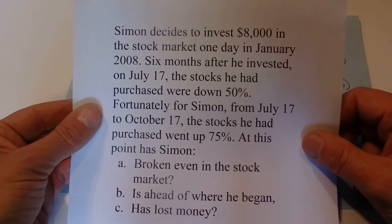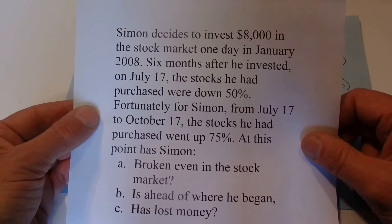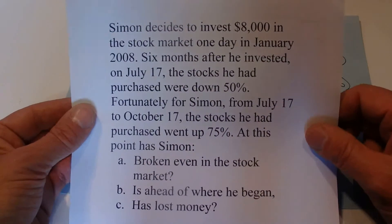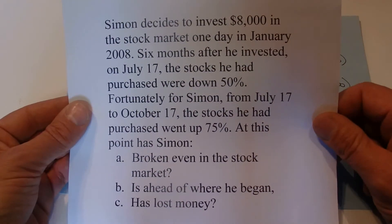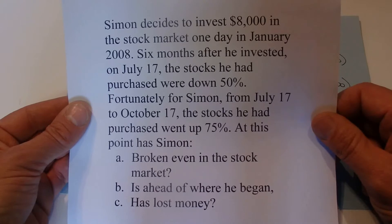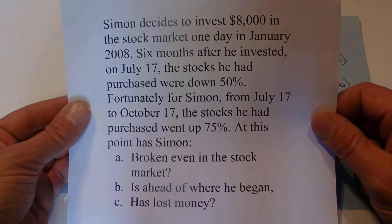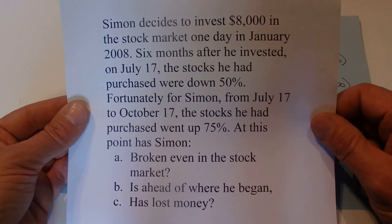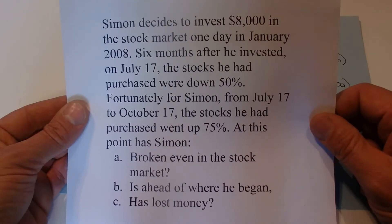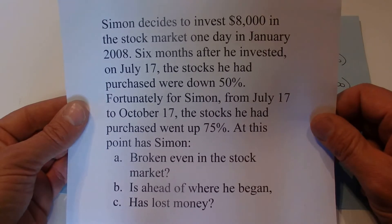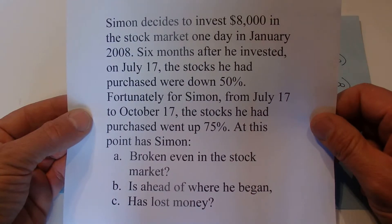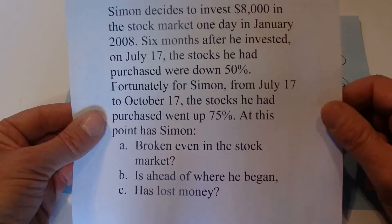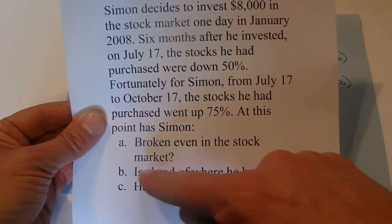Today I'm going to go through one of these cognitive reflection test questions. These are great questions because the most obvious answer is not correct. Here's the question: Simon decides to invest $8,000 in the stock market. In one day in January 2008, six months after he invested — on July 17 — the stocks he had purchased were down 50%. Fortunately for Simon, from July 17th to October 17th, the stocks went up 75%. At this point, has Simon broken even, is he ahead of where he began, or has he lost money?